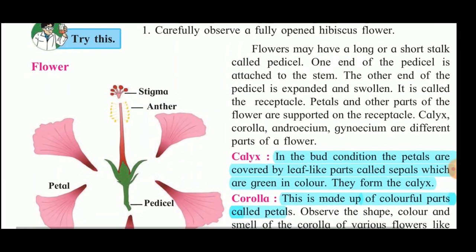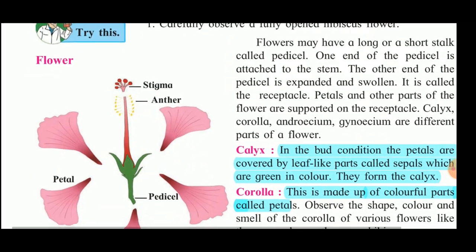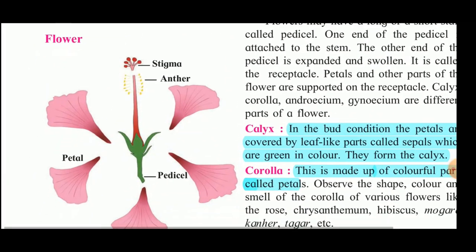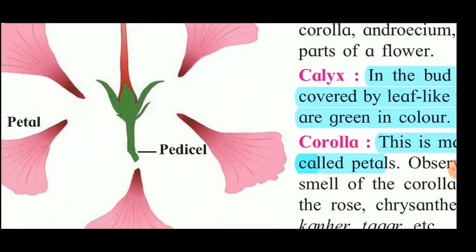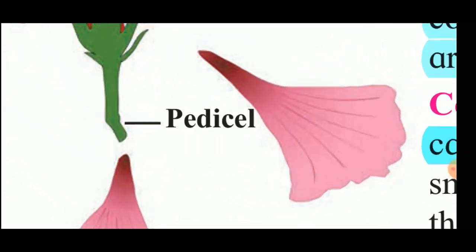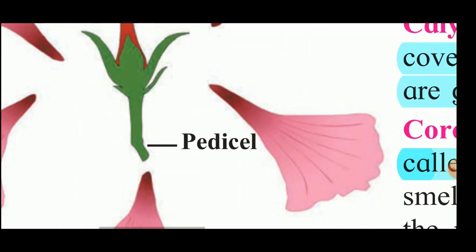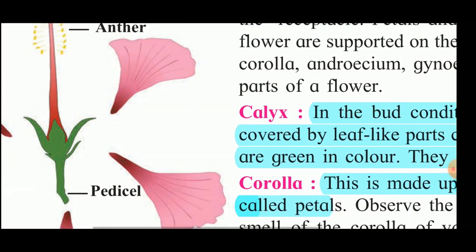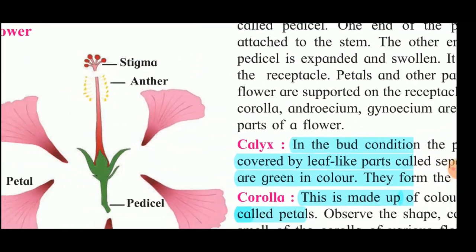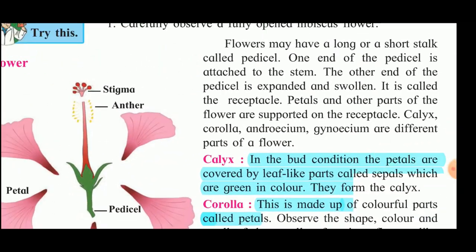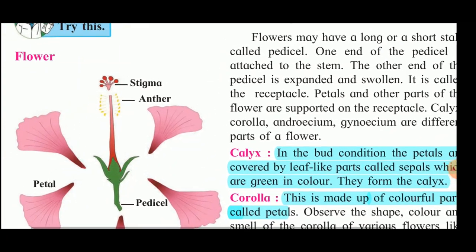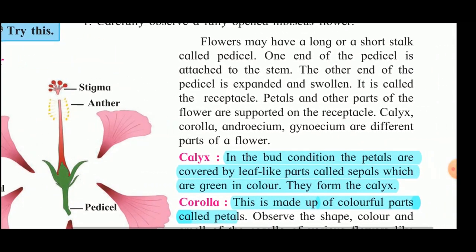The flower has a long or short stalk called the pedicel. The pedicel, which you can see here, is the structure with the help of which the flower is attached to the plant.